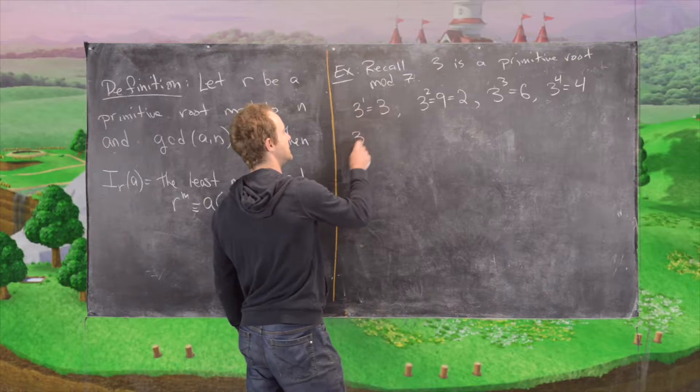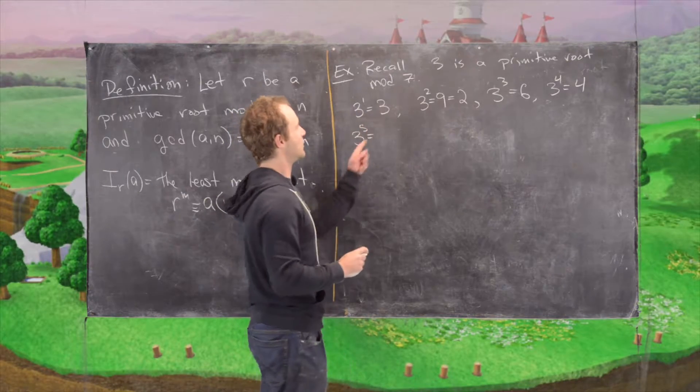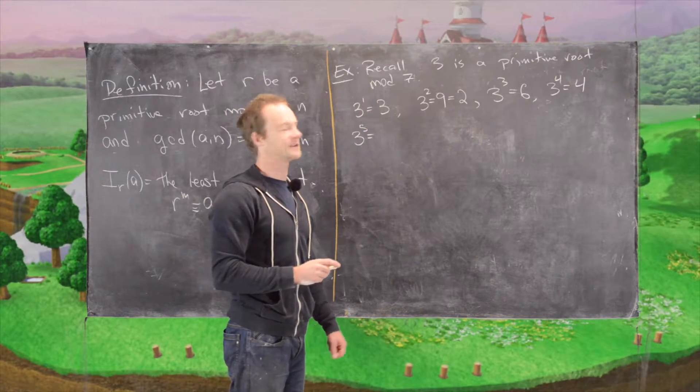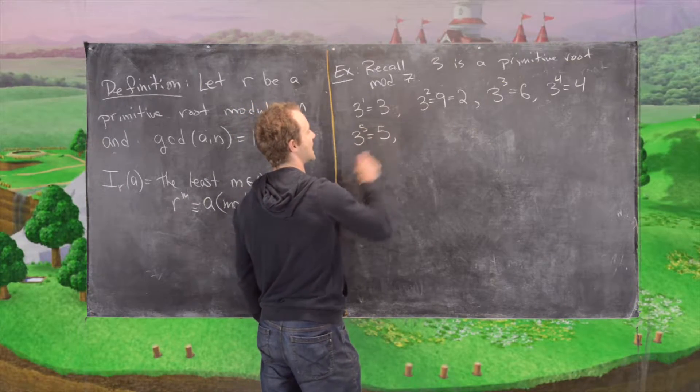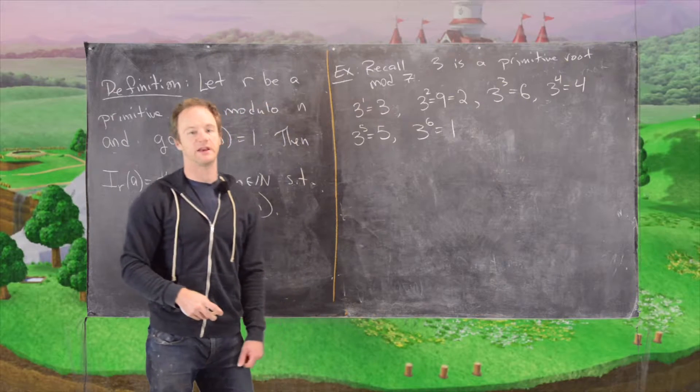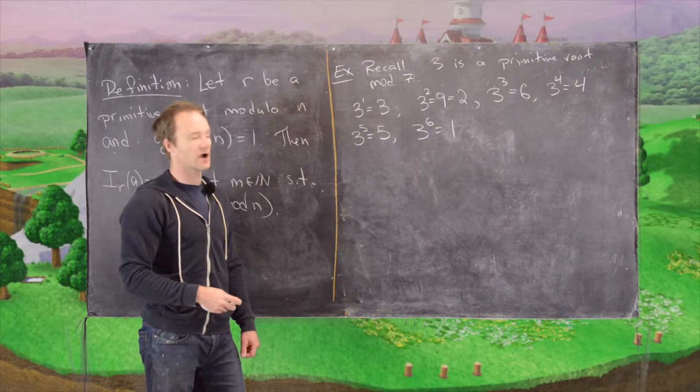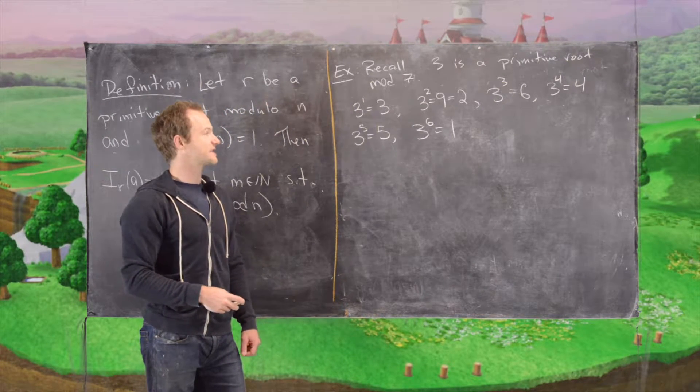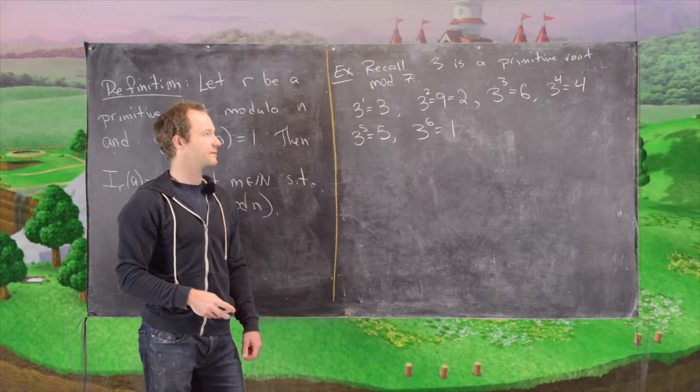And then 3 to the 5th will be 3 times 3 to the 4 so that's 3 times 4 which is 12 which is 5. And then finally 3 to the 6 is 1. And we don't really need to do anything there because we know the order of 3 is 6 given the fact that it's a primitive root.